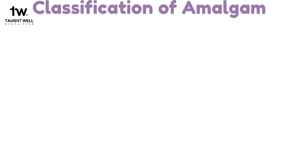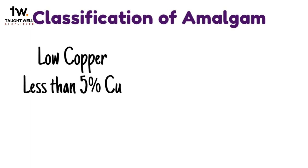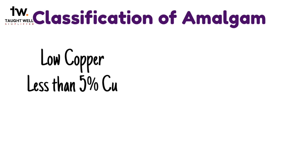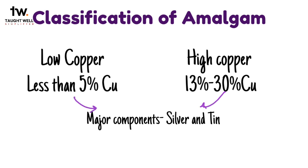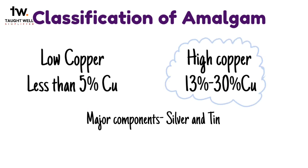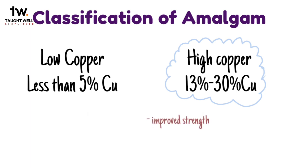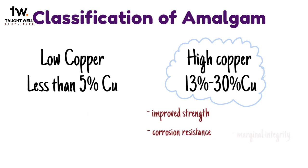Let's have a look at the classification of amalgam. It is now customary to classify amalgam alloys as either low copper, in which the copper content is 5% or less, or high copper alloys, in which the copper content is 13 to 30%. In both types, the major components are silver and tin. In modern dentistry, the low copper formulations have been essentially totally replaced by the high copper formulations due to the improved strength, corrosion resistance, marginal integrity and overall clinically proven better performance of the high copper ones.